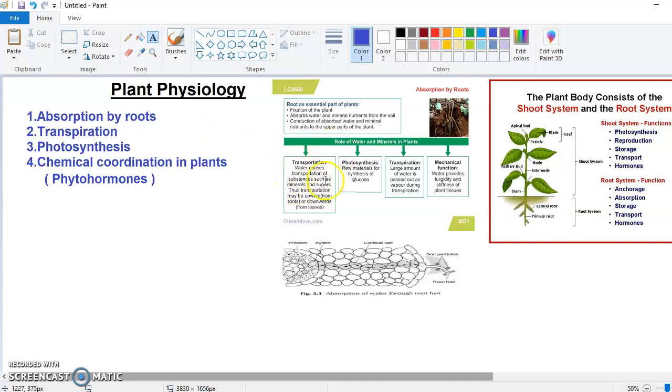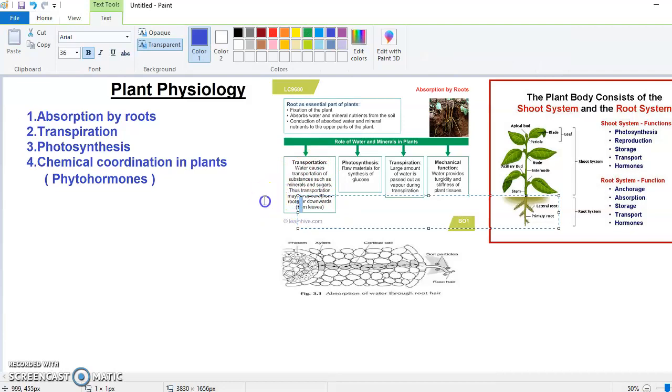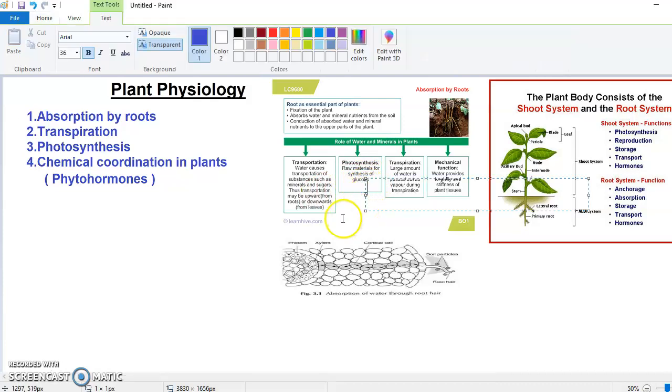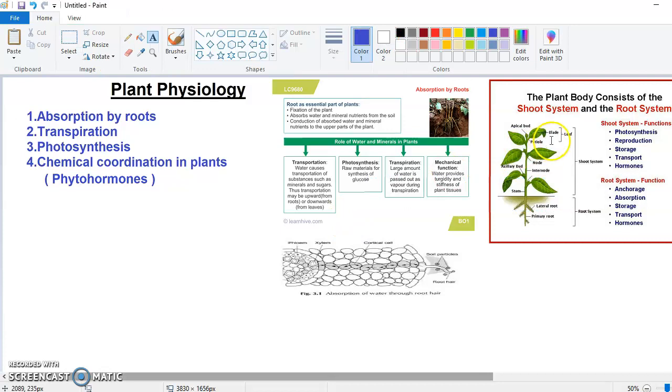In transportation, I will give you a short overview. Whatever plants transport, they transport food and minerals. In the photosynthesis process, plants take CO2, water, and sunlight and make glucose. Glucose is a carbon compound. We will study photosynthesis in detail then. The plants convert glucose into sucrose, then transport it to all parts. The photosynthesis process occurs in the leaves.